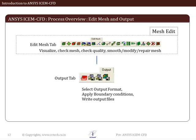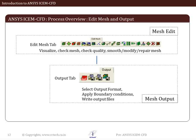Once the correct mesh is generated, it needs to be written in a format understood by the selected CFD solver. The task involves selection of a solver, assigning the boundary types, and exporting the mesh. The available boundary types and mesh format depend on the selected solver. This is the process overview of the different activities done in ICEM CFD.